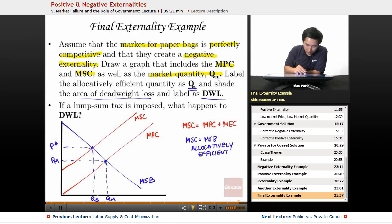Shade the area of deadweight loss and label as DWL. If you're producing this much and the allocatively efficient point is this much, then the deadweight loss is naturally going to be this triangular area that you see right here. So here is referred to as the DWL.